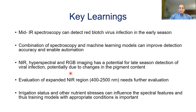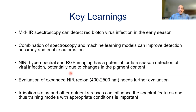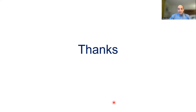It's important to keep in mind that various agronomical factors can also influence spectral features, so the training model must represent appropriate conditions. Other changes due to nutrient stress or irrigation status of the vines, as illustrated in our IR spectroscopy data, mean that appropriate training models need to be developed to represent those conditions. With that, I would like to thank you for your attention and I'm happy to take questions in the Friday session. Thank you very much.